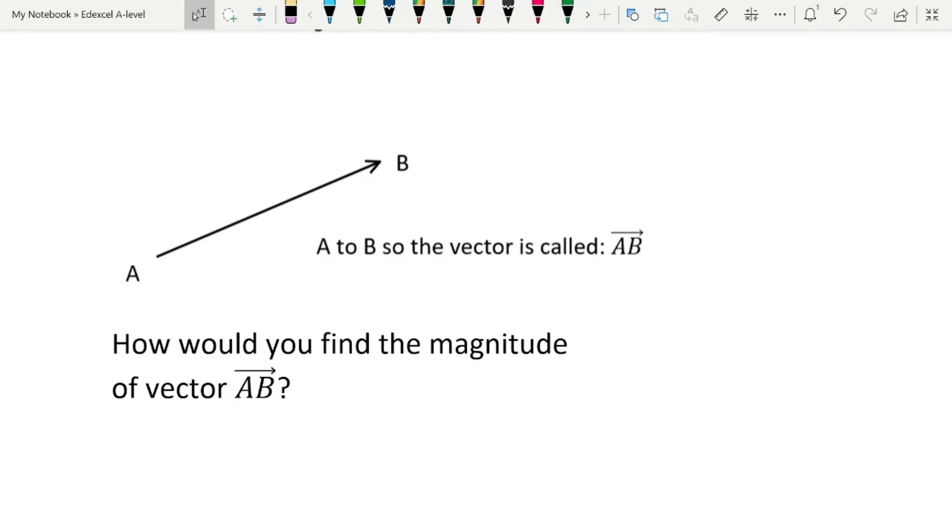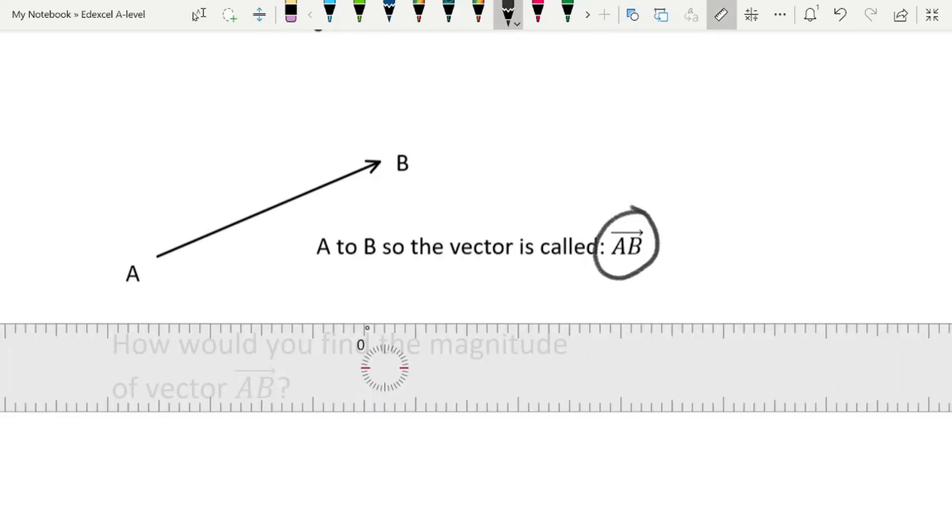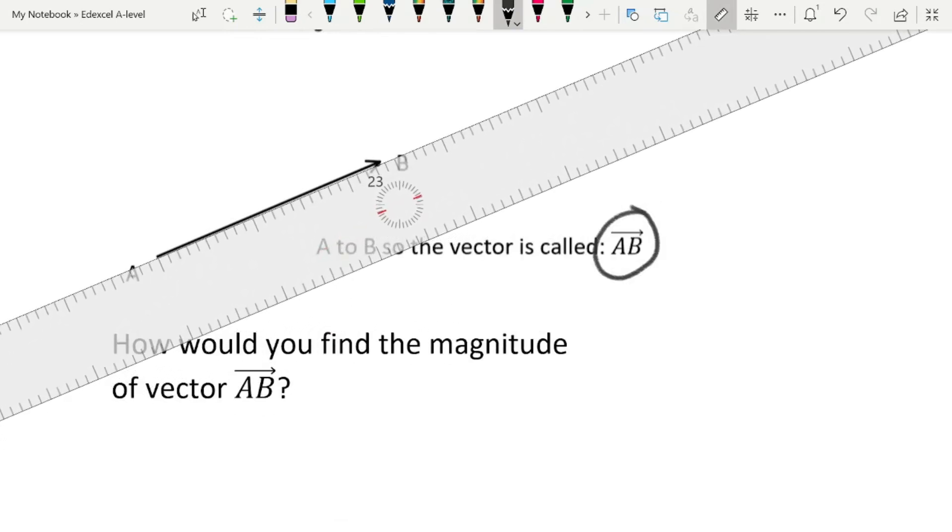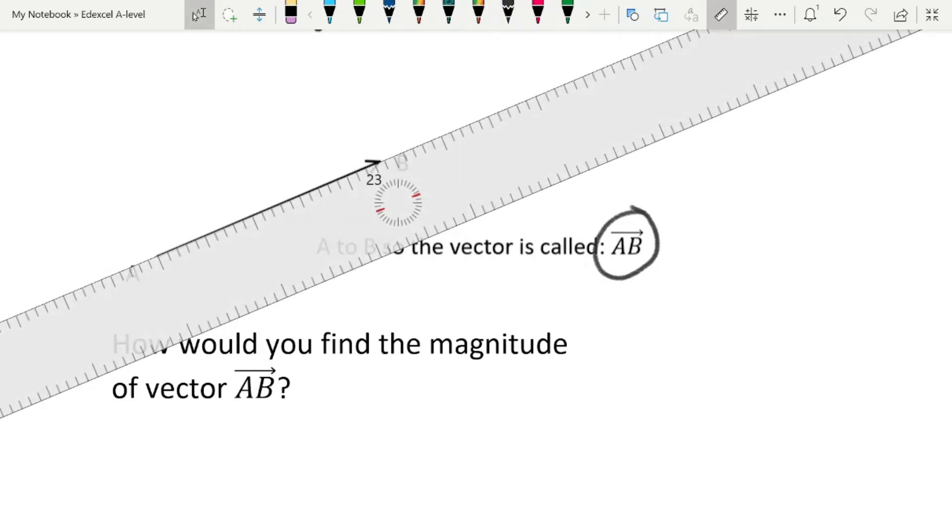So this is vector AB. It could be force. It could be velocity. It could be momentum. It doesn't really matter, because all vectors are treated the same way. And this is the notation. It mentions notation in our specification. So we need to be able to recognize that this is what vector notation looks like. It gives from A to B, and the little arrow over it means that this is a vector. Now, how do you find the magnitude of this vector? It's fairly simple and straightforward. You take a ruler and you simply measure the length of the arrow.